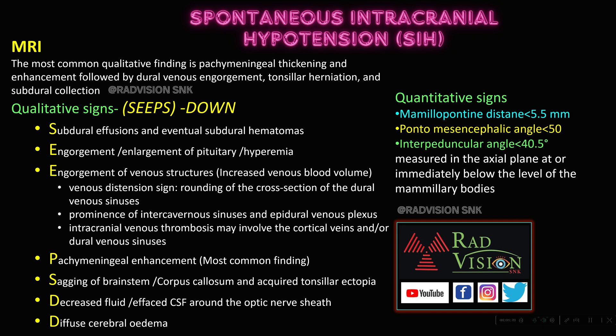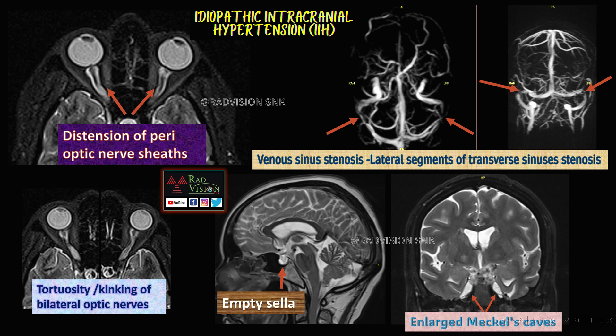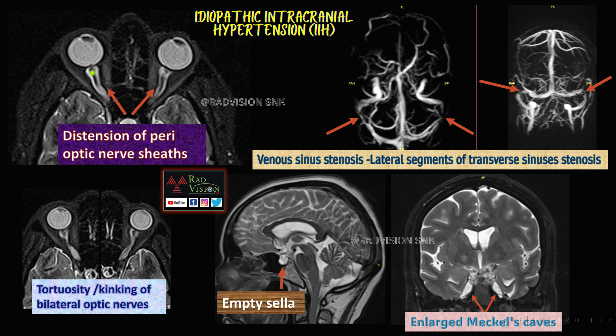These are all classical qualitative and quantitative signs to remember in spontaneous intracranial hypotension, which is mostly a missed diagnosis and the main culprit in cases of chronic headache. The counterpart is idiopathic intracranial hypertension. In that condition you can see distension of the perioptic nerve sheaths, tortuosity and kinking of the optic nerve, empty sella, enlarged Meckel's caves, and venous sinus stenosis — that is lateral segment of the transverse sinus stenosis.